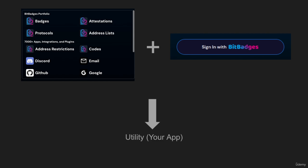A diagram to show what BitBadges offers at a high-level: we offer a suite of tools, whether that be a Sign In with BitBadges feature, integrations and plugins, or your portfolio with different data structures such as badges, attestations, verticals, and lists. As an app developer, you can outsource all the criteria-checking logic and authentication logic to BitBadges — all multi-chain — and integrate it with a single interface, allowing you to focus on the core utility of your app.